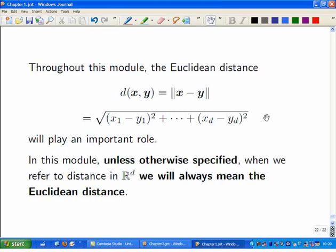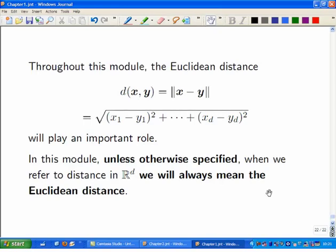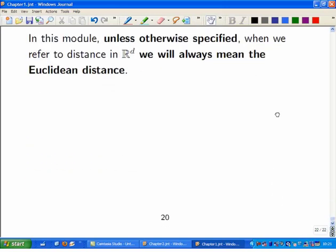So whenever you see this distance d, it's always going to mean the same thing here. That's the only distance we're using in R to the d. In other modules you can use other notions of distance and sometimes other notions of distance are more relevant. But this is the usual notion of distance in R to the d, and so if we don't say otherwise, that's what we're using. It's the Euclidean distance. And that brings us to the end of chapter one.